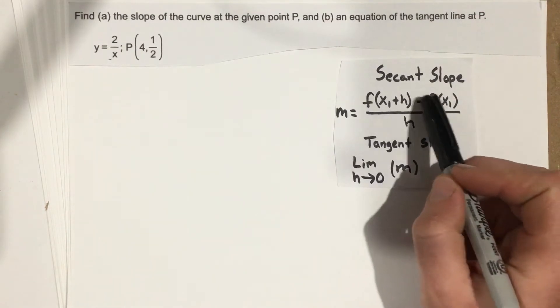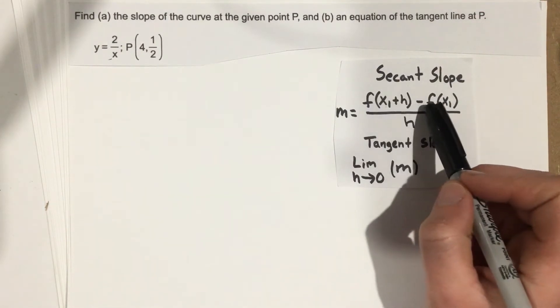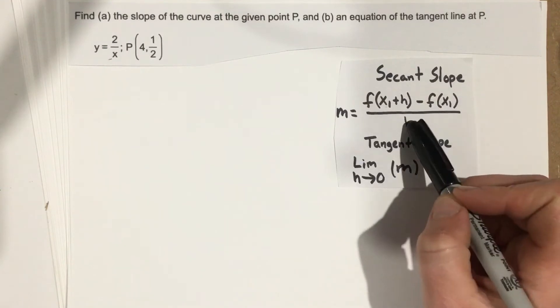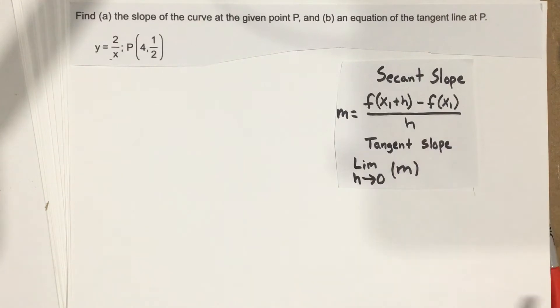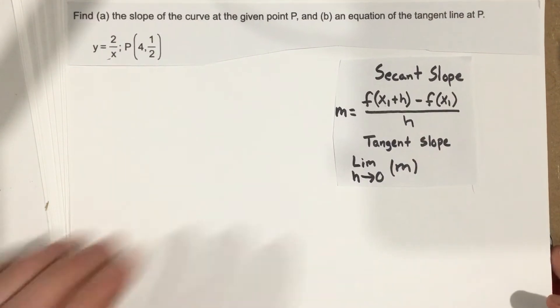So we need to start by using f of x plus h minus f of x like we've done before, all over h. And then once we find that expression, we need to take the limit as h approaches 0.